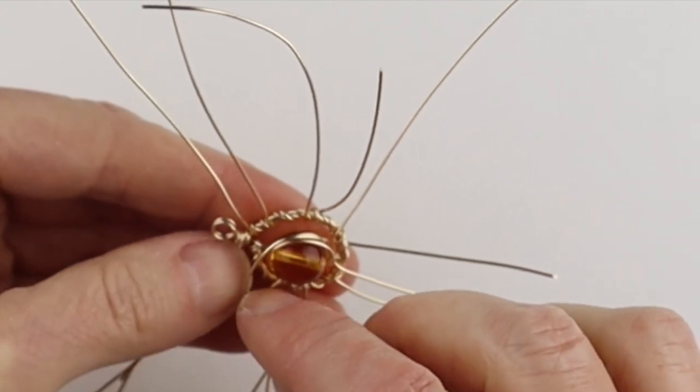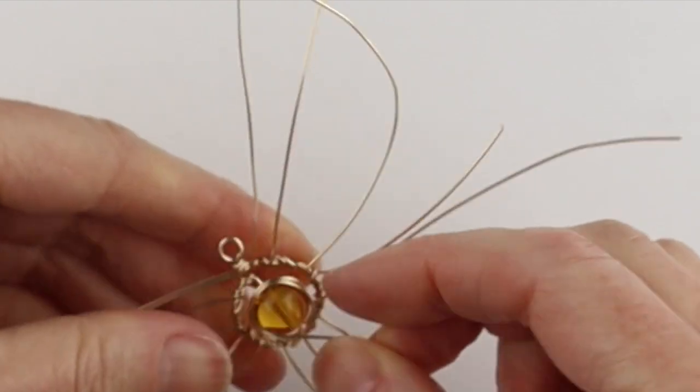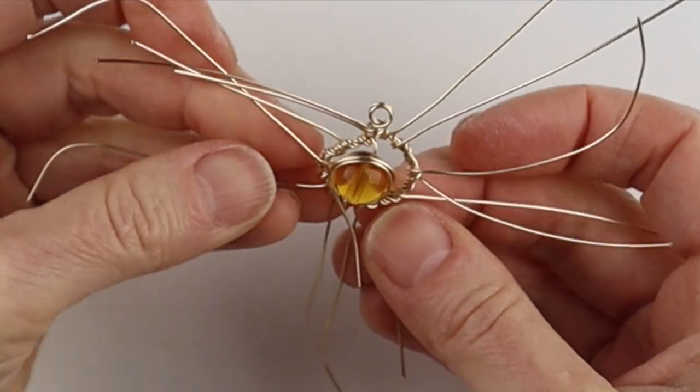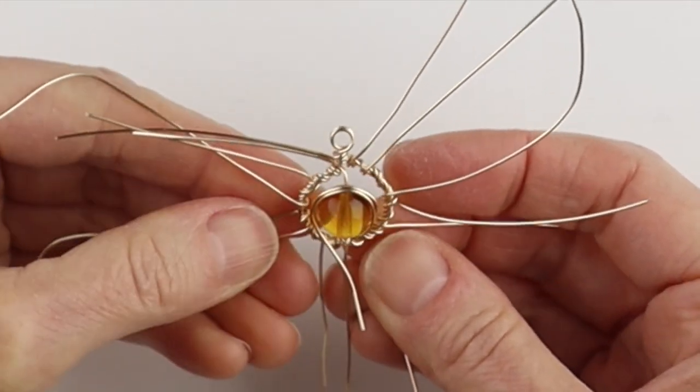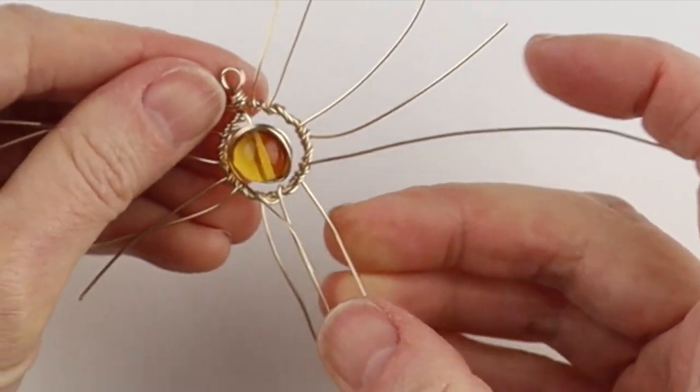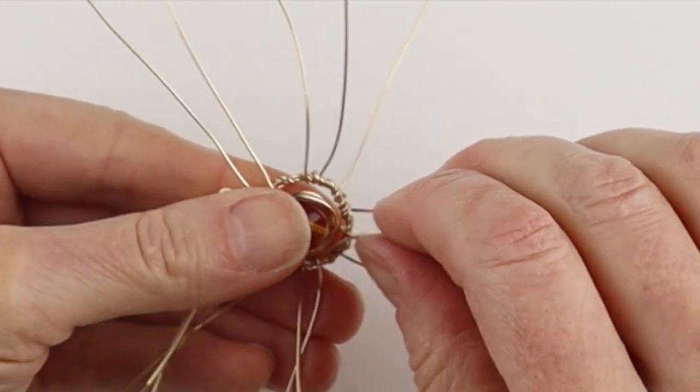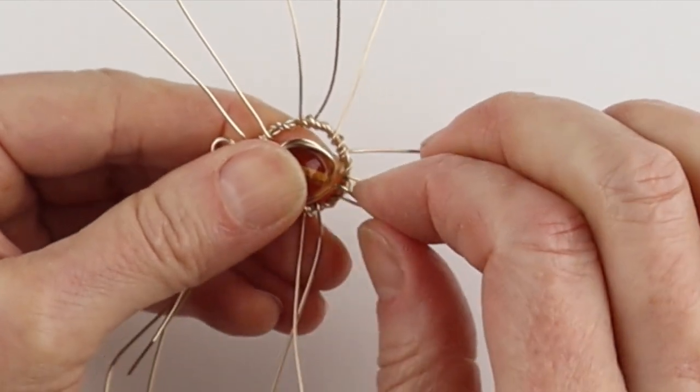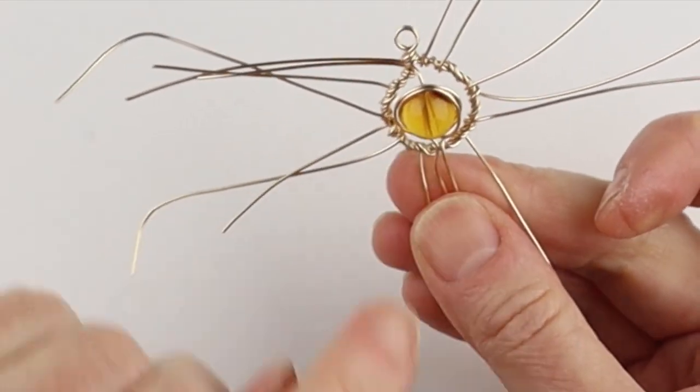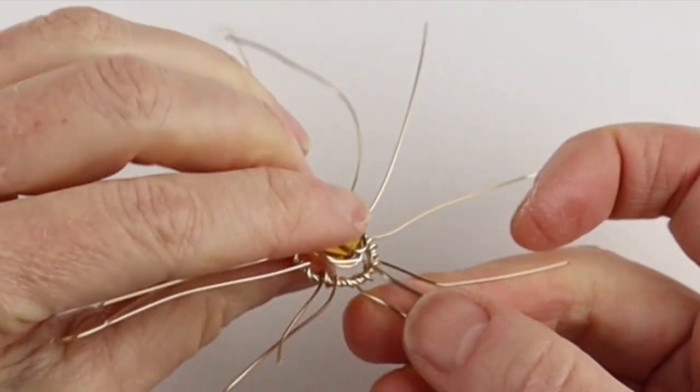And however much wire you have, you can keep winding it around. You can even add more wire if you want more wire around the outside. So from there, we're just going to take it down to where the center point of the bead is. Bend it down. And then we can attach it down here. So flip it around.